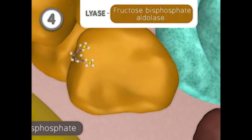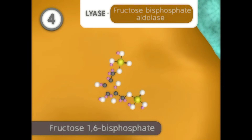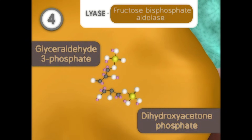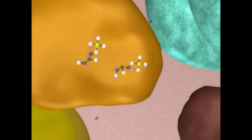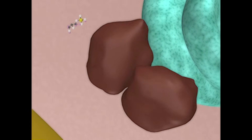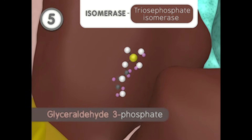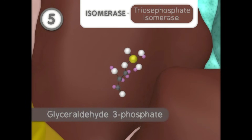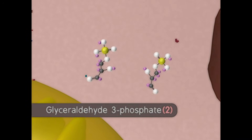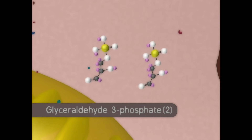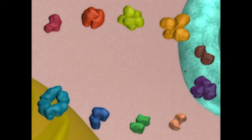In the fourth step of glycolysis, a lyase reaction splits the 6-carbon fructose-1,6-bisphosphate into two 3-carbon sugars: dihydroxyacetone phosphate and glyceraldehyde-3-phosphate. The dihydroxyacetone phosphate is rearranged by another isomerase to form a second glyceraldehyde-3-phosphate. At this point in glycolysis, glucose has been metabolized into two glyceraldehyde-3-phosphates and two ATPs have been consumed.